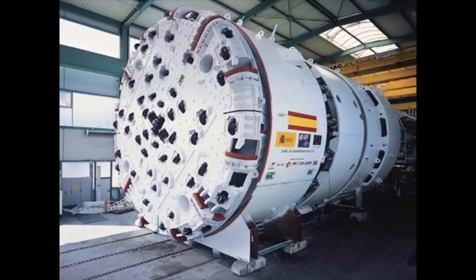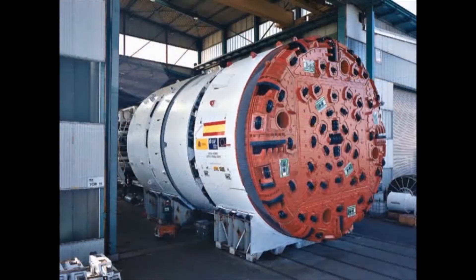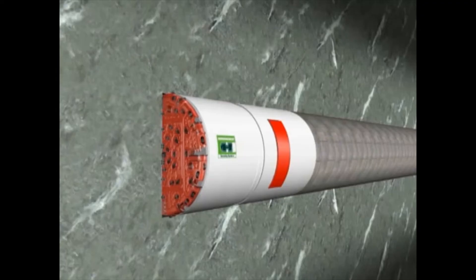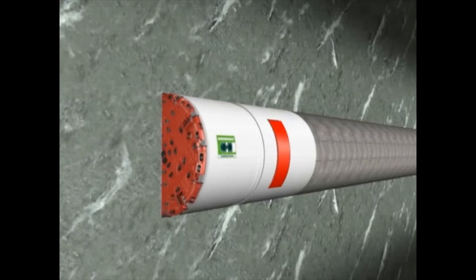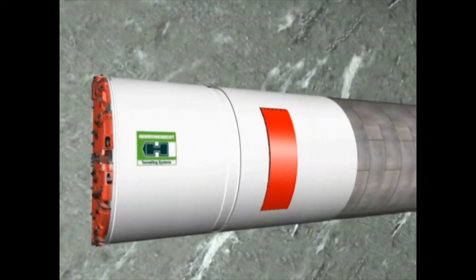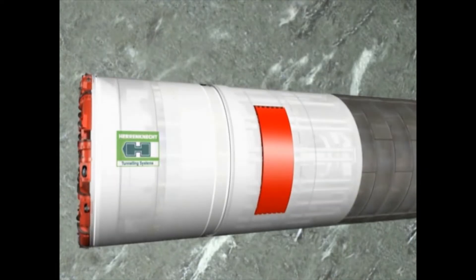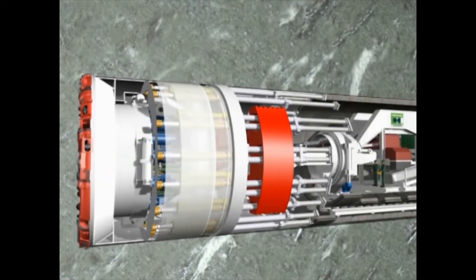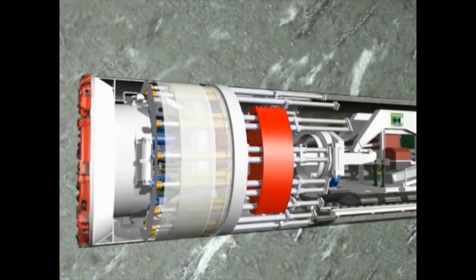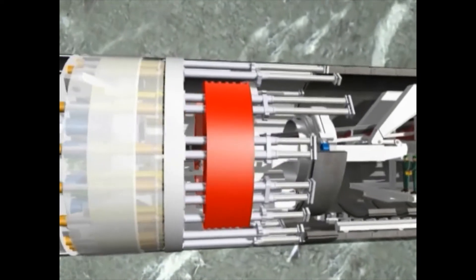Following is the machine concept of the double-shield TBM in its operational sequence. The tunneling takes place in protection of a thrust shield, which serves as a rock support until the tunnel lining is installed. In the rear part of the tunnel-boring machine, the so-called tail-skin, reinforced concrete elements are installed.